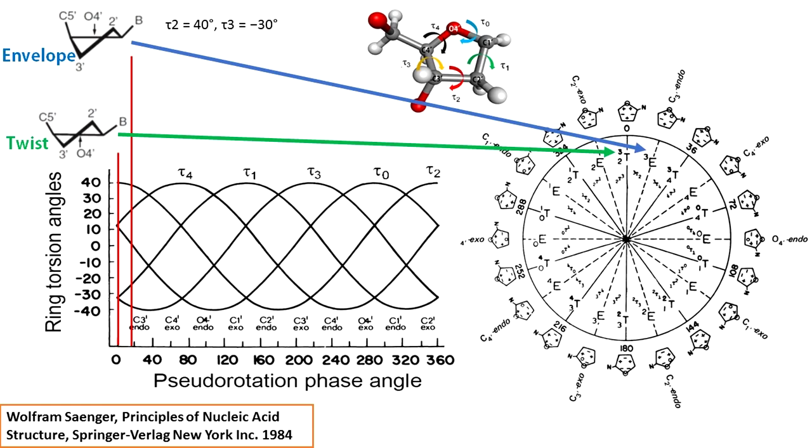See, the twist conformation when pseudo rotation phase angle is 0 degrees. Both C2' and C3' deviate from the sugar plane. When phase angle increases to 18 degrees, tau1 and tau3 increase 10 degrees each, while tau2 remains nearly constant. This drives C3' further away from the sugar plane while pulling C2' into the plane. This is how envelope and twist forms alternate every 18 degrees.